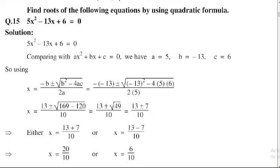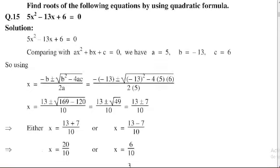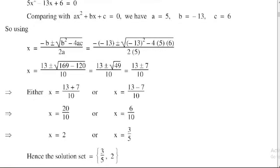Second, 13 - 7 = 6, 6 divided by 10, 2 times 3, 6 divided by 5, 10. Then x = 6/10 = 3/5. Hence the solution set is equal to {3/5, 2}, which is the required solution.